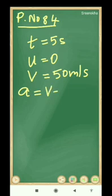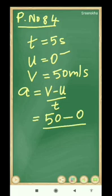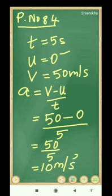We need to find the acceleration. Using the equation a is equal to v minus u by t: v is 50, u is 0 (dropped from rest), and t is 5 seconds. So acceleration equals 50 minus 0 by 5, which is 50 by 5, that is 10 meter per second square. The unit of acceleration is meter per second square, so the answer is 10 meter per second square.